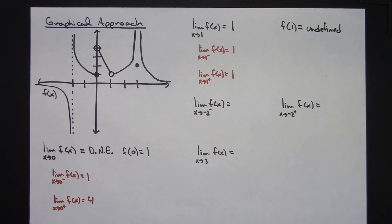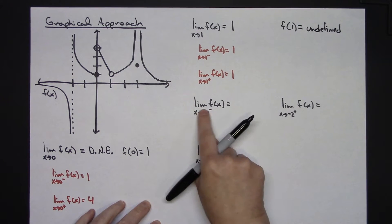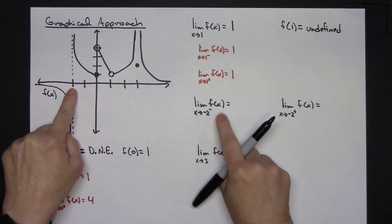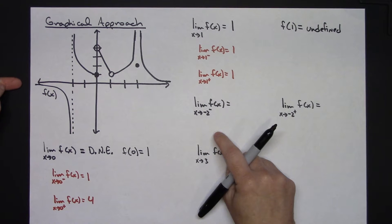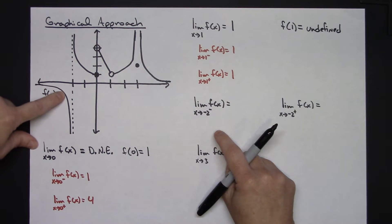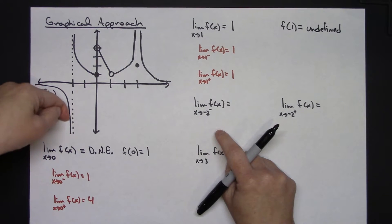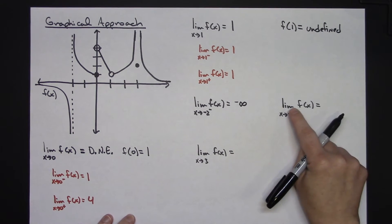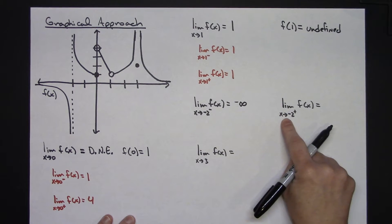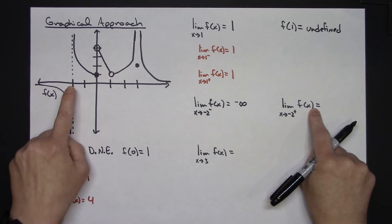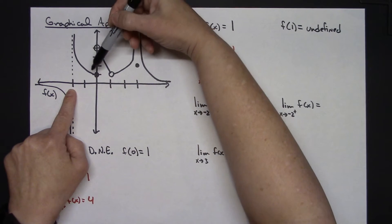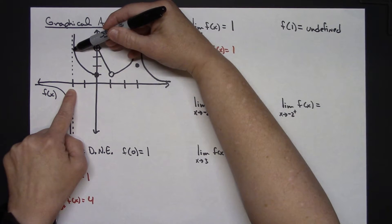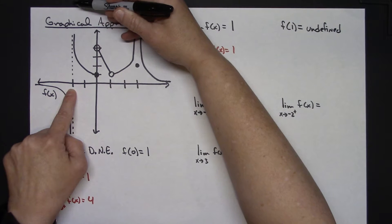Now let's look at some one-sided limits. The limit as x approaches negative 2 from the left of f of x: as I come from the left and the function gets really close to negative 2, the y-value it attains is negative infinity. The limit as x approaches negative 2 from the right of f of x: coming from the right, as it gets really close to x = negative 2, the y-value attains positive infinity.